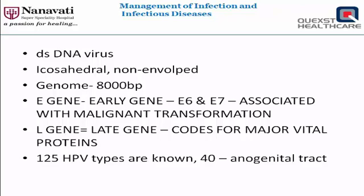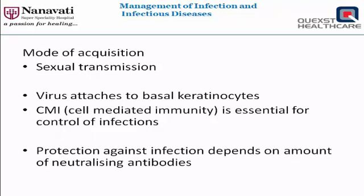About 125 subtypes are known and 40 of them are seen in the anogenital tract. The mode of acquisition is sexual transmission. The virus attaches to basal keratinocytes, and cell-mediated immunity is important for prevention and control of infection.